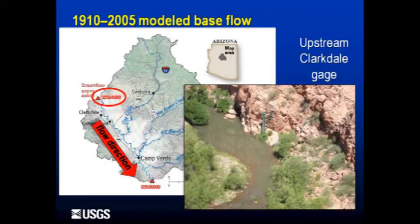Then it exits the Verde Valley at the lower triangle — the pour point for all of the water, and sort of the accumulation of all the effects that can happen to the water, the base flow in the river. You might observe them at this point.